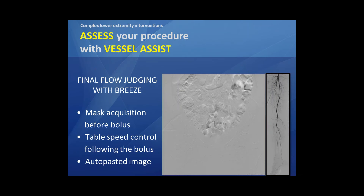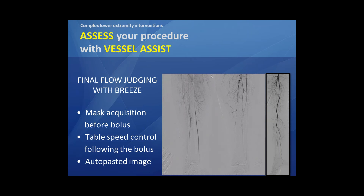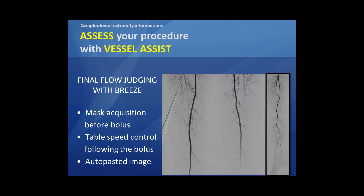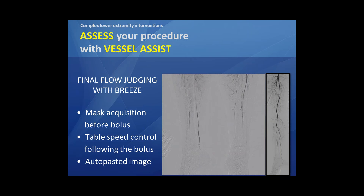At the end, you can have the best tools available during your procedure. Of course at the end, we want to judge the final result. We do this in a very easy way with the breathe mode of our Discovery system. First of all, we mask the acquisition before the bolus injection, and then following with a table-speed control system the bolus, in order to have a perfect overview — everything is automatically pasted together. With just one bolus of contrast, we have a perfect auto-pasted image from the common femoral all the way to the foot.